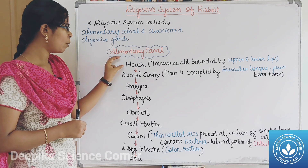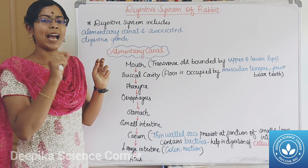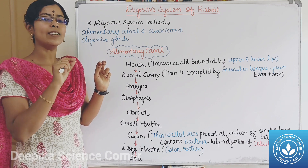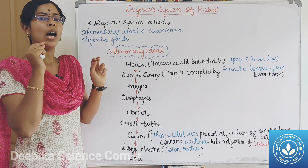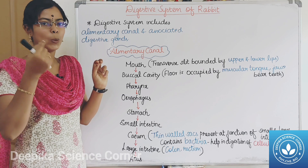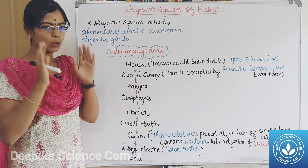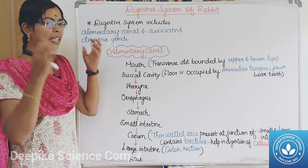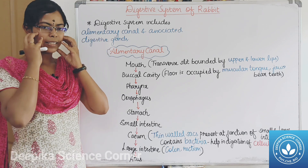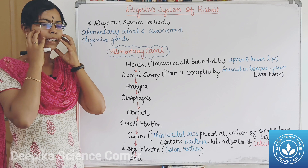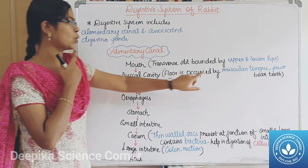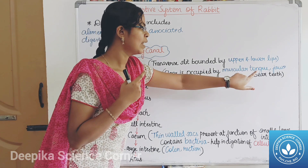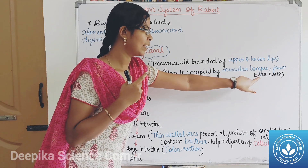The mouth is a heterogeneous transverse slit. It is a transverse cut of the upper lip and lower lip. The mouth includes the buccal cavity, the muscular tongue and jaws which bear the teeth.